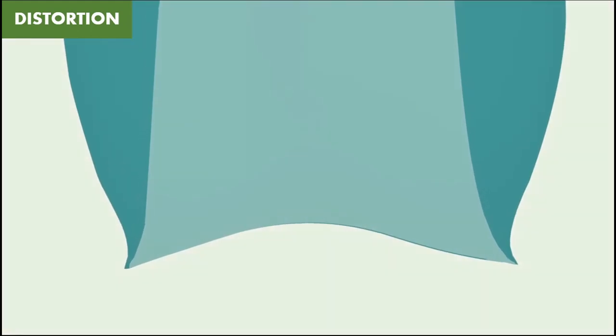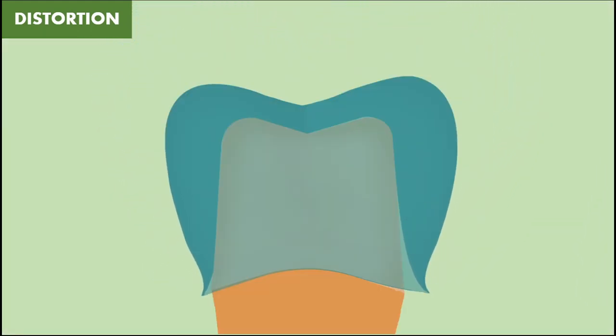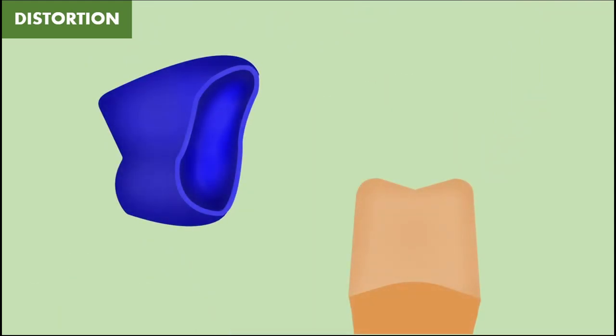Wax distortion also occurs if the pattern is not invested immediately after removal from the die. If the wax pattern is not in the die, stress relaxation of the wax can happen and dimension of the pattern may get altered. So wax pattern should be removed from the die and it should be invested immediately. So primarily, distortion of the wax pattern before or during investing is the reason for distortion that occurs in the castings.